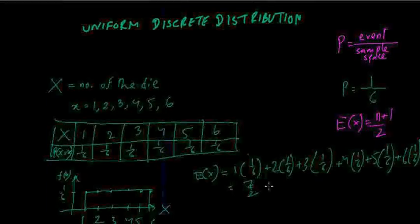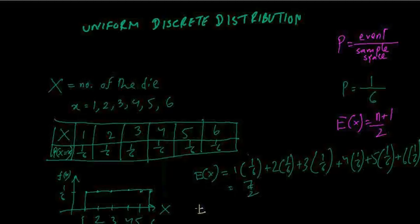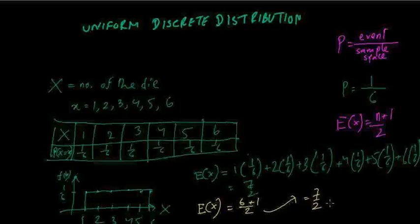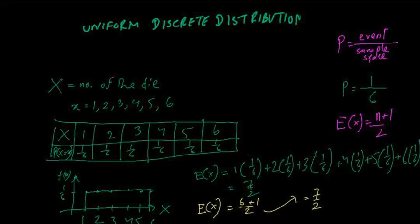Instead of doing that long calculation, just use the formula: the expected value equals (n+1)/2, where n is the total number of random variable values. Here n=6, so it's (6+1)/2 = 7/2. It would be a waste of time to use the long method, so whenever you have a uniform discrete distribution, use this formula.